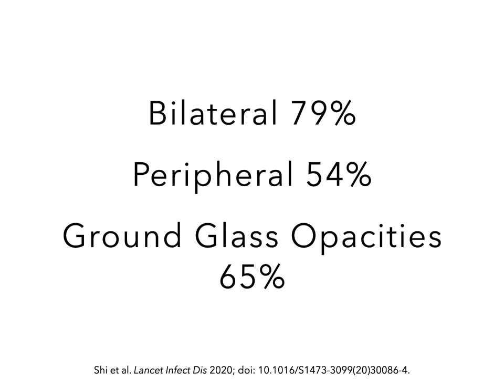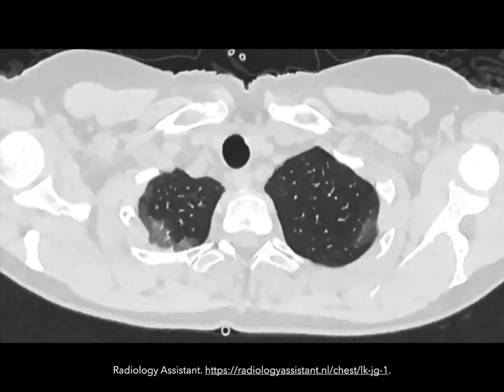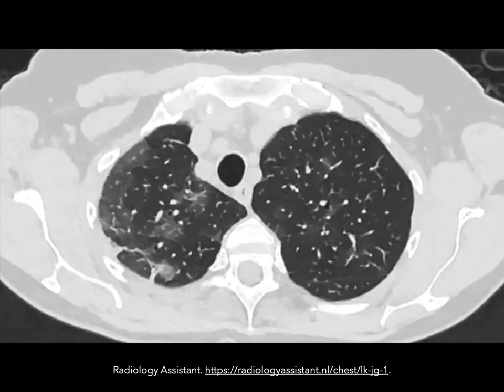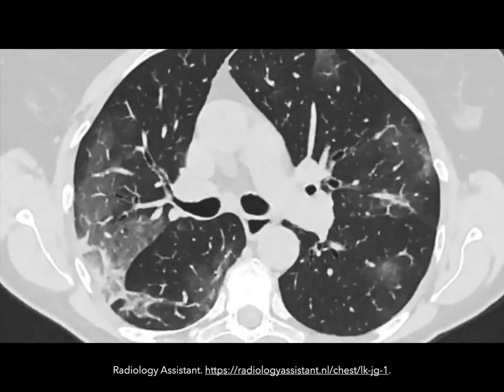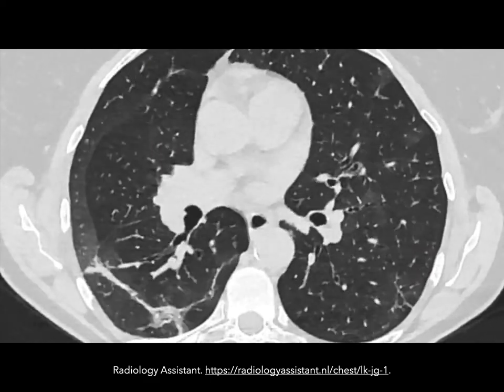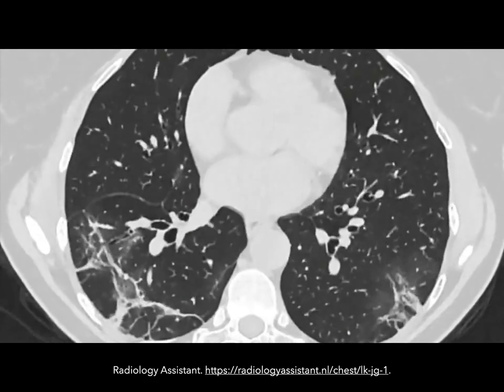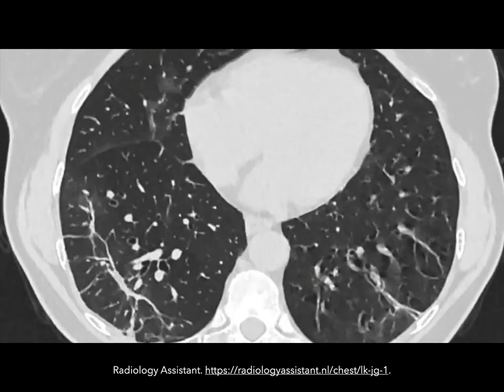Pathophysiologically, COVID seems to initially damage the alveoli, causing alveolar edema and inflammation — this explains why the majority of patients present with peripheral-based pathology. Ground glass opacities were the most common CT finding, occurring in 65% of patients. Here's an example of a CT of a patient with COVID: we can see bilateral lung involvement, a mix of ground glass opacities and denser consolidation, and lesions that are mostly peripherally based.